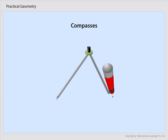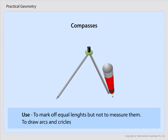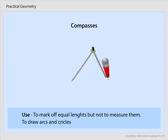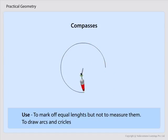The compasses. A pair with a pointer on one end and a pencil on the other. Its use? To mark off equal lengths but not to measure them, and to draw arcs and circles.